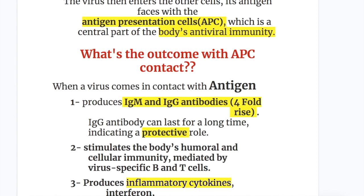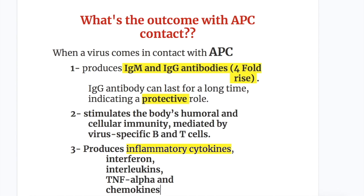When a virus comes in contact with APC, three things occur. Number one, the cells produce IgM and IgG antibodies — the IgG antibodies have a four-fold rise and can last for a long time, indicating a protective role. Second, cells stimulate the body's humoral and cellular immunity mediated by virus-specific B and T cells. Third, the cells produce inflammatory cytokines: interferon, interleukins, TNF-alpha, and chemokines.